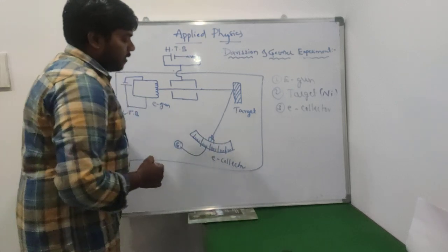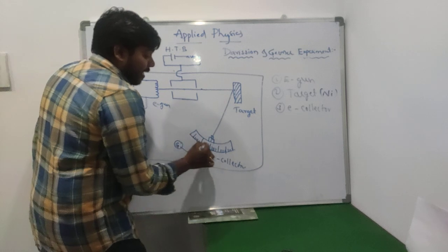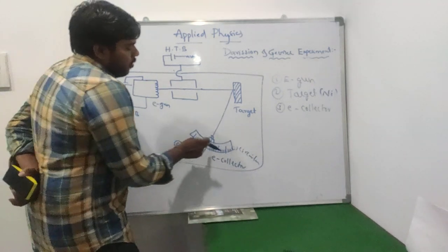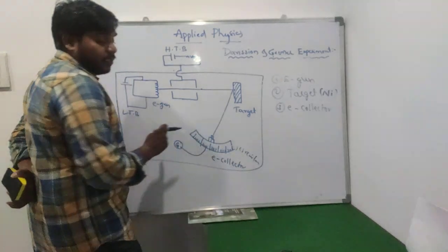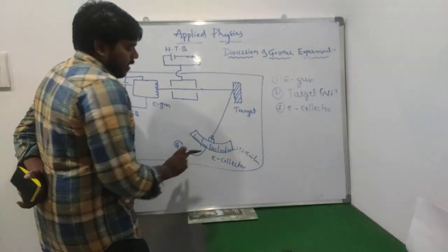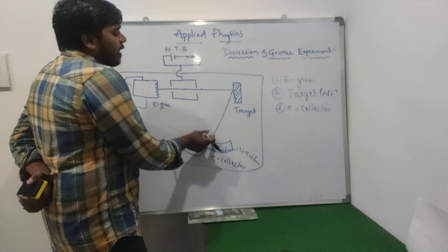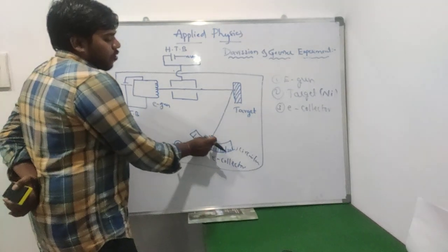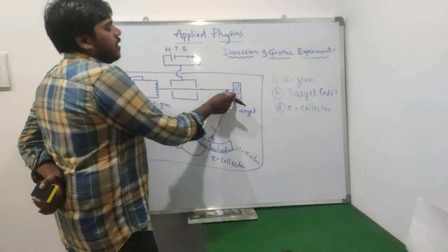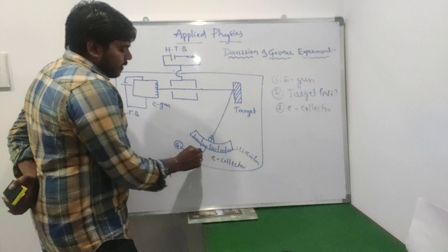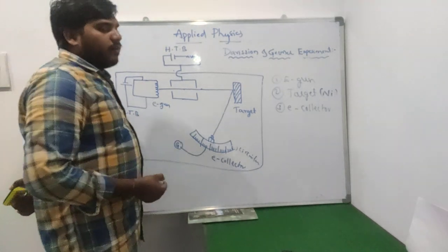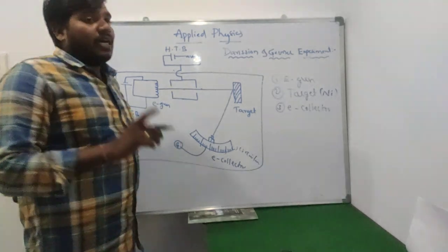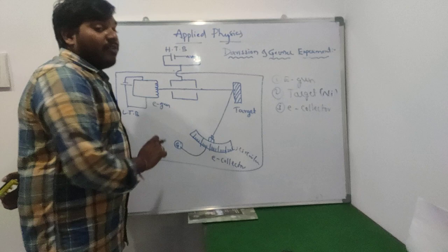The electron collector is placed on a circular scale and can move freely along it. Its function is to collect the diffracted electrons coming from the target. The electron collector is connected to a galvanometer. Whenever the electron collector absorbs electrons, the galvanometer detects the resulting current and shows a deflection.